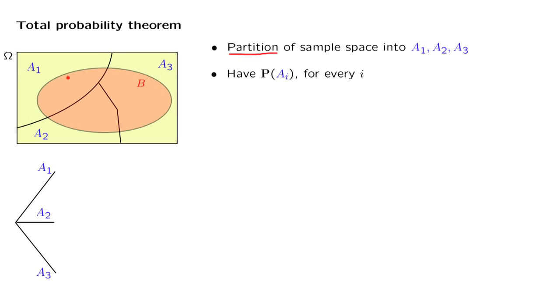We're interested in a particular event B. That event B can happen in three different ways: it can happen under scenario 1, under scenario 2, or under scenario 3. And this corresponds to these particular sub-events.